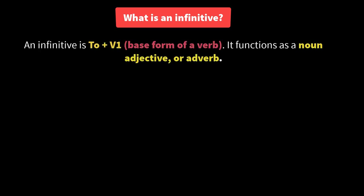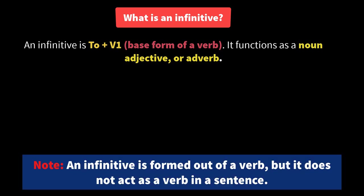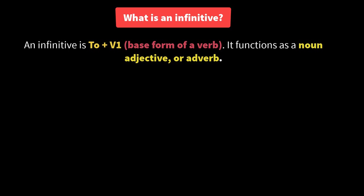Before we understand what is an infinitive phrase, it's important that we understand what is an infinitive. An infinitive in English is nothing but 'to' plus the first form of the verb, or base form of the verb. The interesting thing is, though it is formed out of a verb, it does not act as a verb. It functions as a noun, adjective, or adverb.